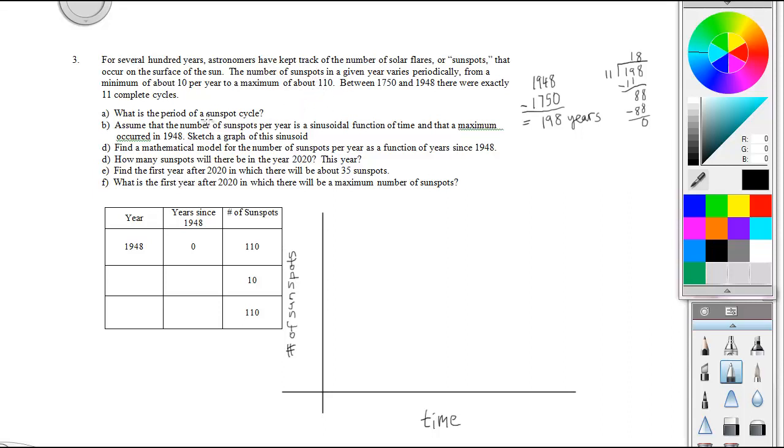The first question asks, what is the period of a sunspot cycle? There were 198 years in this period from 1948 to 1750. You know there were 11 complete cycles in those 198 years, so take 198 and divide it by 11 to get the length of one cycle. This first question is 18 years.